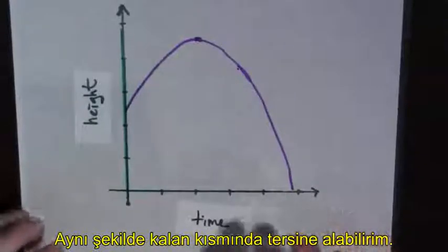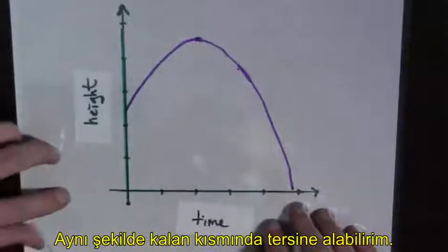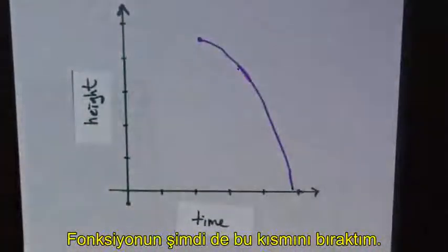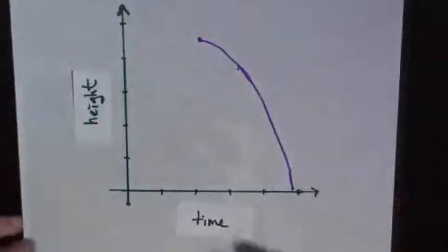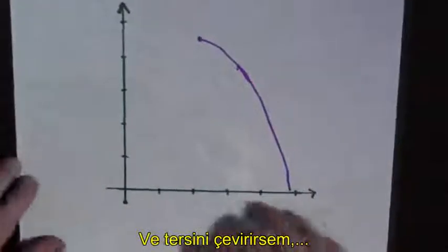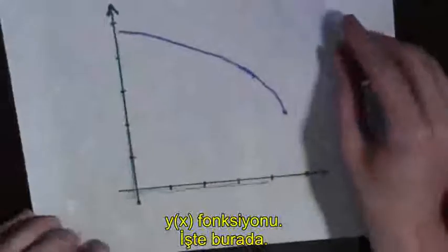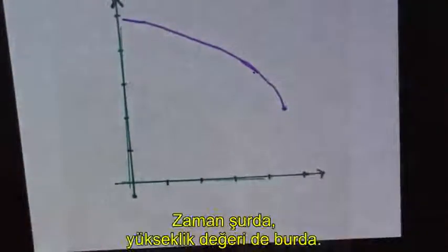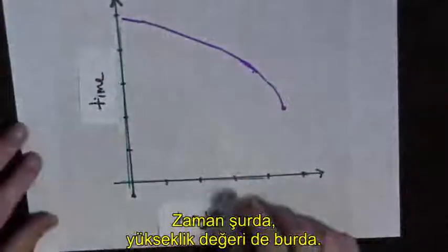Likewise, I can restrict the domain the other way, too, and be left with this part of the function. And now I can take the inverse by flipping it over to the line y equals x. Here we go. And now this is time. This is height.